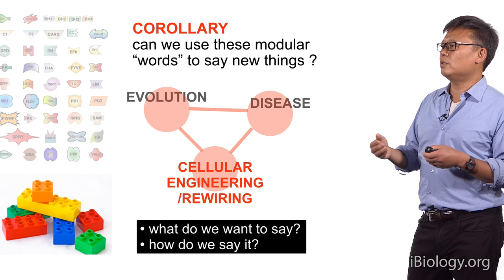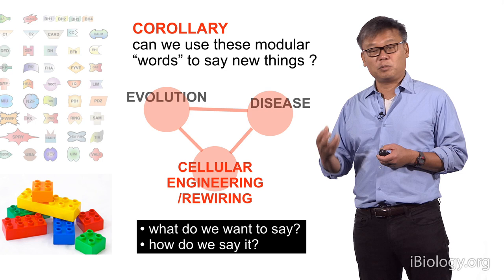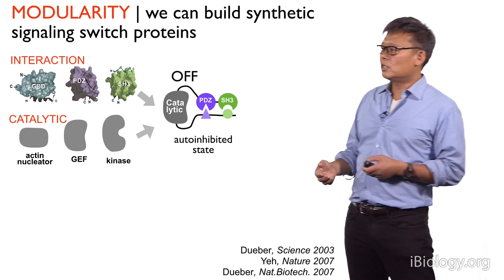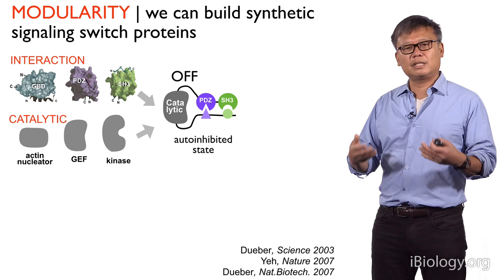A corollary of this is that if this is really true, then it argues that we should be able to use these modular words to say new things — that perhaps we can actually use them to engineer cells in a somewhat systematic and logical way. So about ten years ago my group started to explore this question and ask: could we start building new types of signaling proteins as well as signaling networks and cellular behaviors?